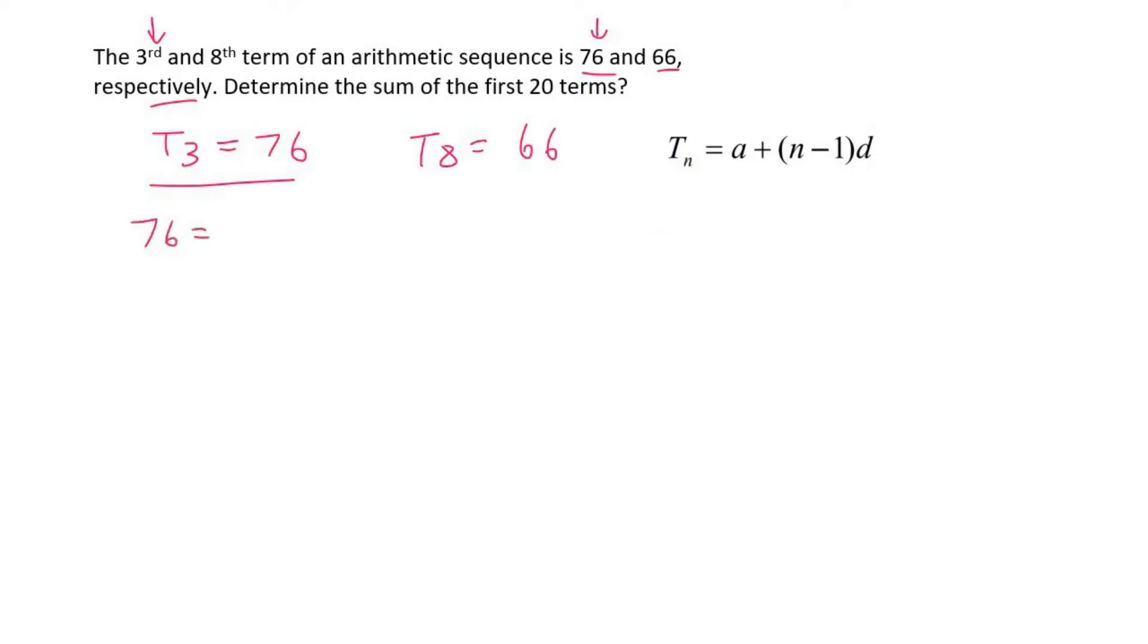So 76 equals A plus, that's term 3, so 3 minus 1, times D which we don't know. So 76 equals A plus 2D. Then using this formula, 66 equals A plus 8 minus 1 times D. So 66 equals A plus 7D.